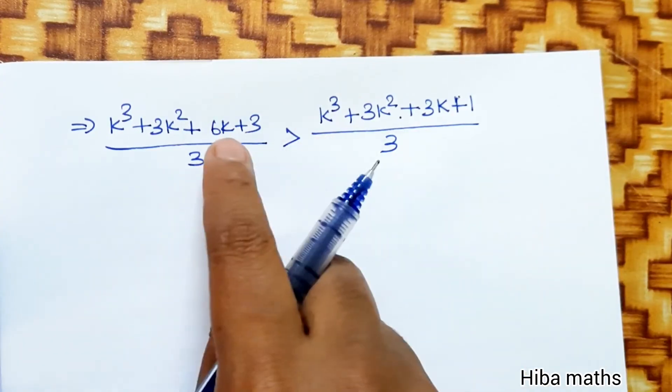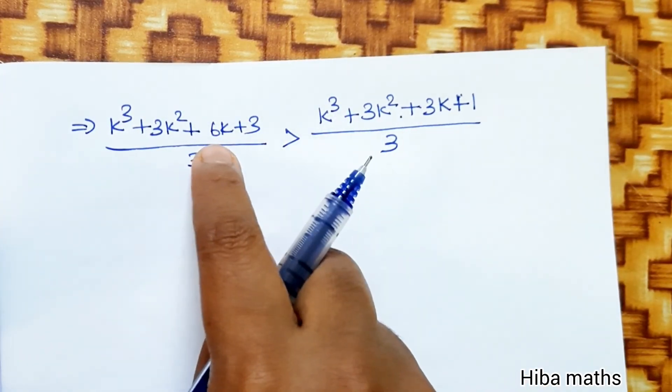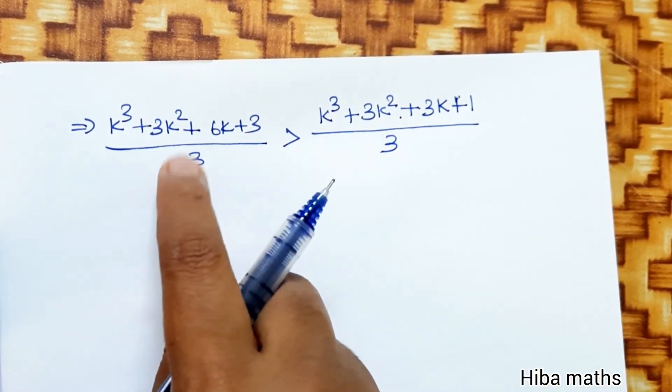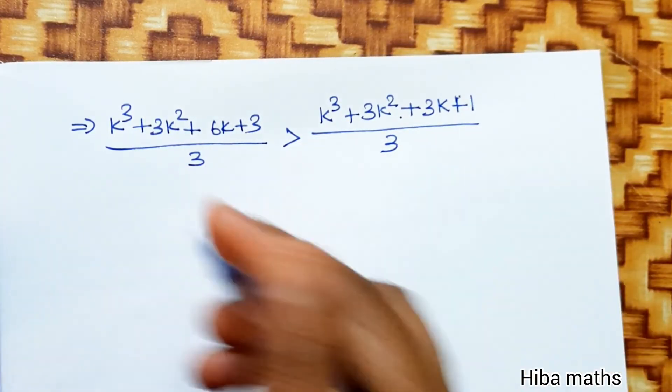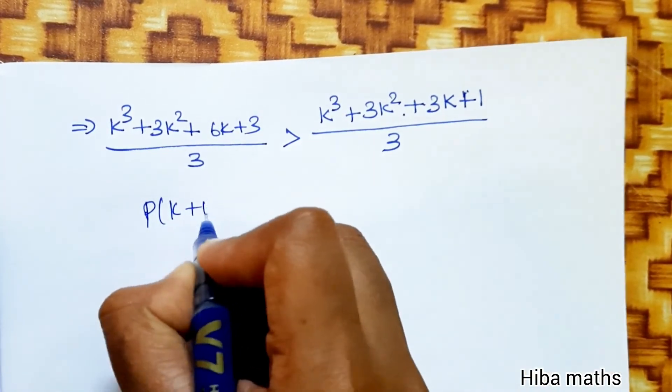3k² matches 3k², but we have 6k which is greater than 3k. So the statement is proved, therefore P(k+1) is true.